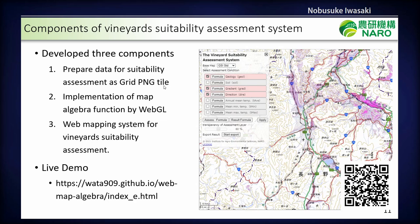This is a screen of the system we developed. The vineyard suitability assessment system is composed of three components. First, we prepare data for the suitability assessment as grid-PNG tiles. Second, we implement the map algebra function using WebGL. Third, the web mapping system for the vineyard suitability assessment is implemented using Leaflet. You can access the live demo version of this system at the provided URL.